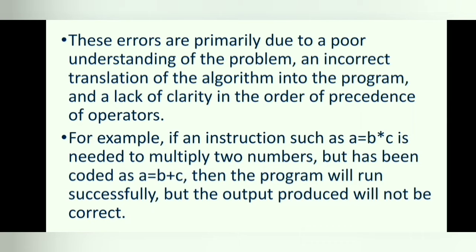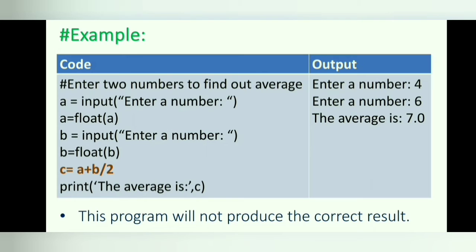For example, if an instruction such as a equals b times c is needed to multiply two numbers but has been coded as a equals b plus c, then the program will run successfully, but the output produced will not be correct. This example will calculate the average of two numbers entered by the user, but the program will not produce the correct result because of the order of precedence of operators. Here the division will be evaluated before the addition because the division operator has a higher precedence than the addition operator, so the output will be 7 instead of 5.